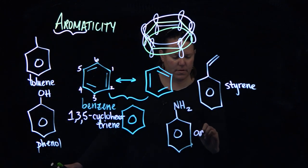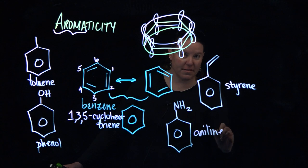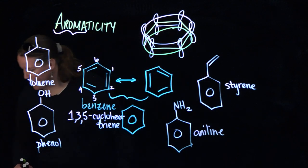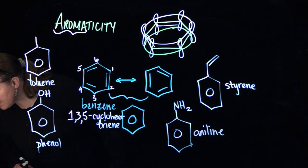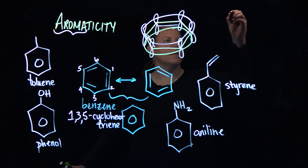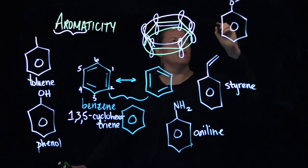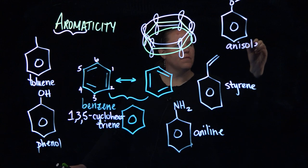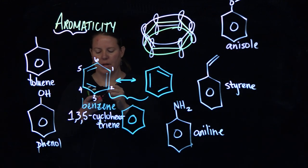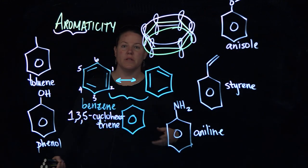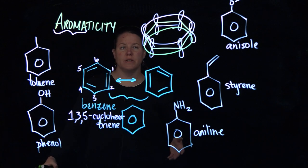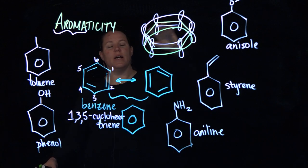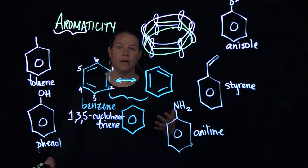Anisole is actually a methoxy group coming off of it. There you go. So that's anisole. There's several common names that you should probably know something about. And that's really the first thing to know about aromaticity. Extraordinary stability that happens with the overlapping pi system.